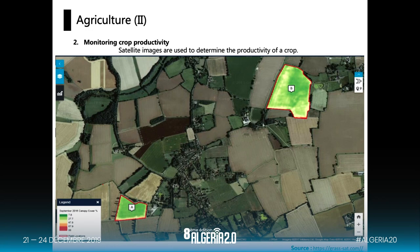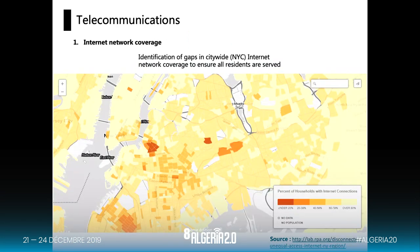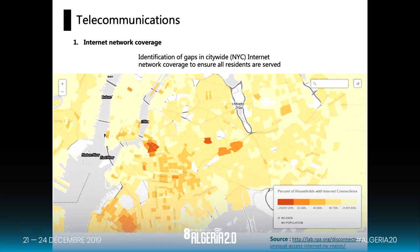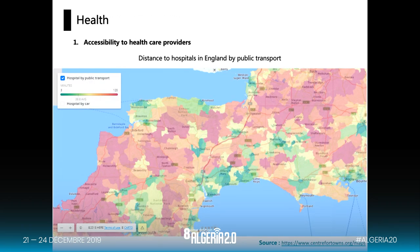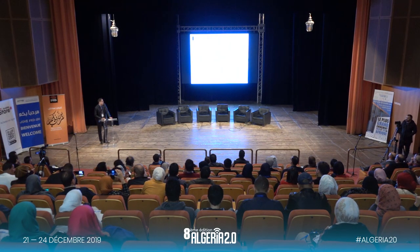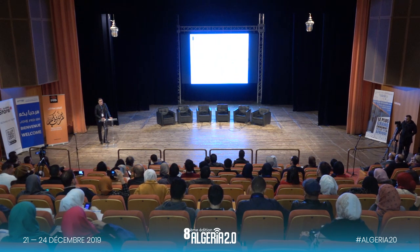In agriculture, we use satellite data to measure crop productivity. In telecommunications, spatial data can estimate the percentage of internet coverage in specific places — this is likely already used in Algeria. In health, we can calculate the distance to hospitals or healthcare providers. An example from England shows that even there, it can take two hours to reach a hospital by public transport. This type of analysis would be very helpful in Algeria.